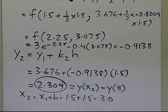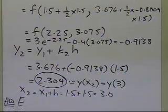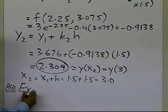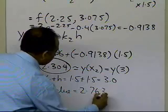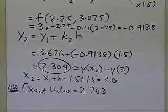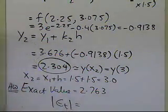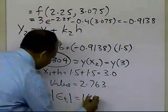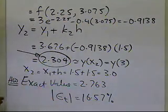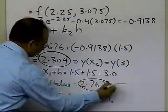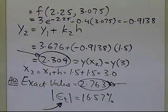So the approximate value of y at x equal to 3 is 2.304. The exact value, which I'm assigning as homework for you to derive using your knowledge of ordinary differential equations, is 2.763 to four significant digits. The absolute relative true error between the exact and approximate values turns out to be 16.57 percent.